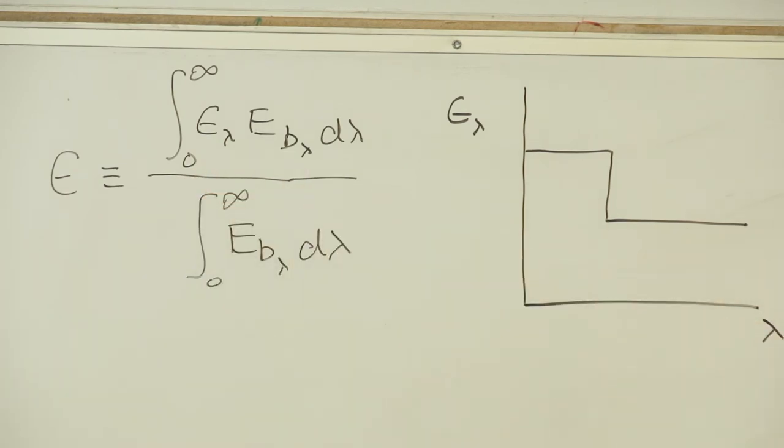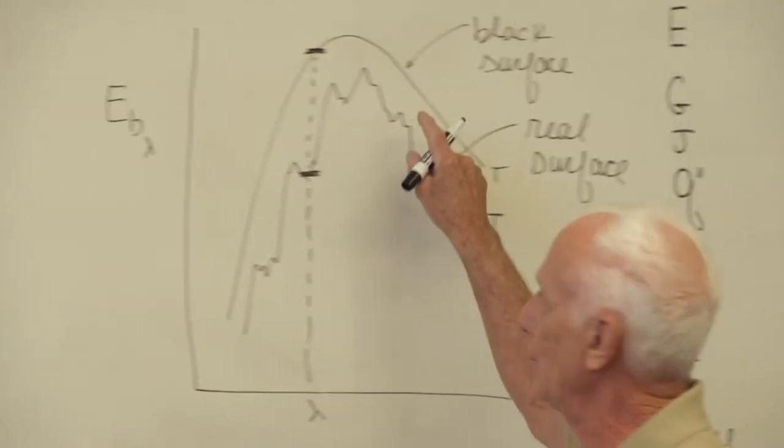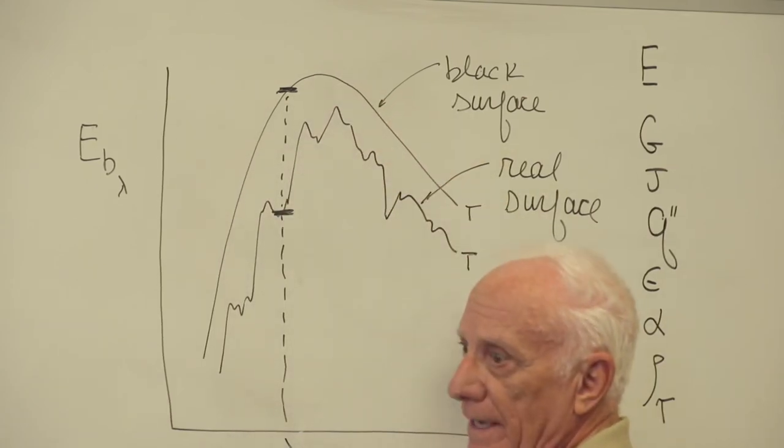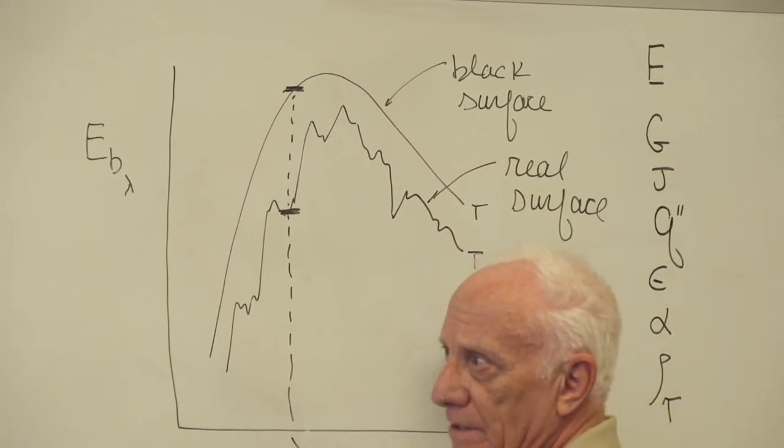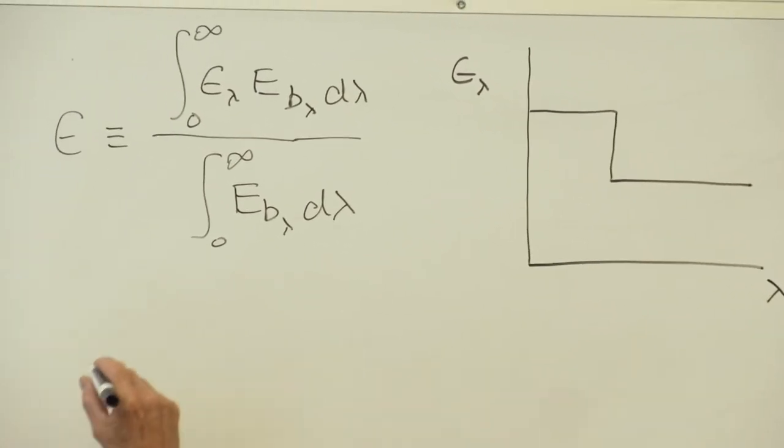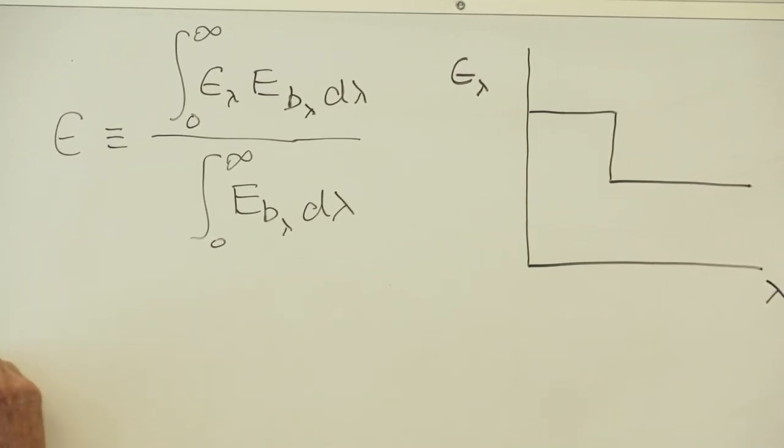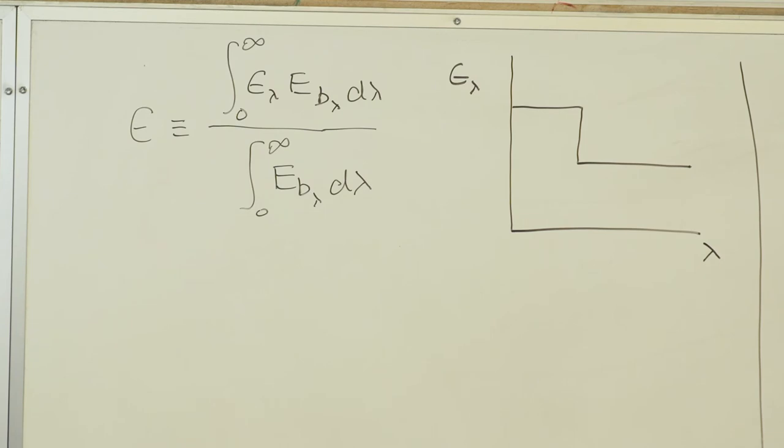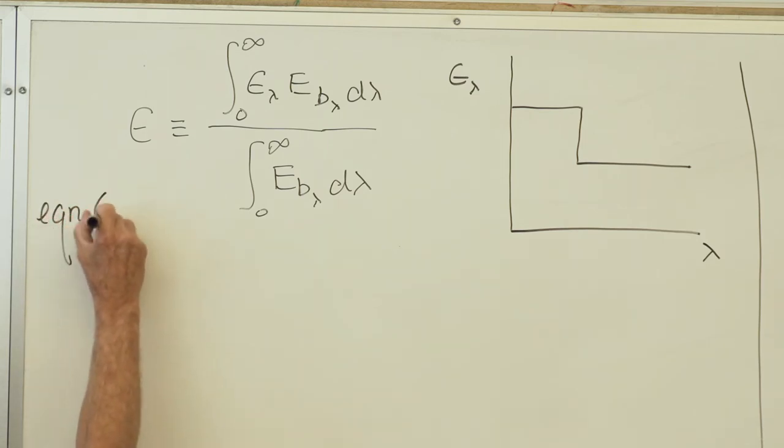There it is. What is the numerator? It's like the area under this jagged curve. What's the denominator? The area under the black body curve, integrating from zero wavelength to infinity. So it's the ratio of two areas. That's what we need. Because it's such a busy chapter, I'm going to give you the equations so you know where to look. Equation 12.43.